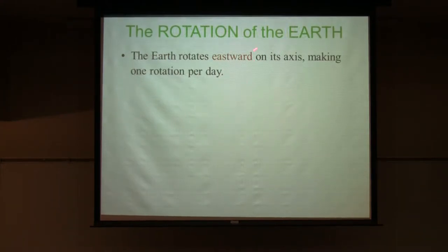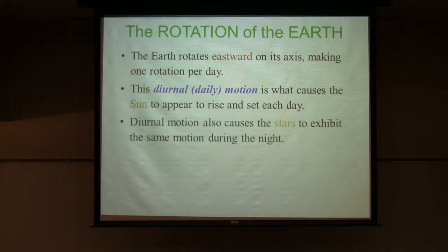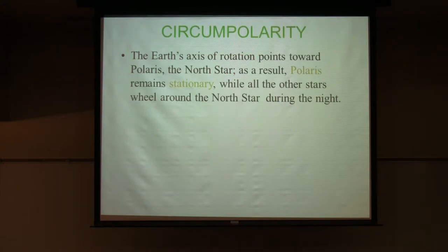Here's what I didn't know in 1957: the earth rotates eastward on its axis, making one rotation per day — that's what causes the sun to appear to rise and set each day. Diurnal means daily — same thing. Also, the stars do the same thing at night because of the earth's rotation — that was new information for me when I was just getting started. The earth's axis of rotation points towards the North Star, Polaris, so Polaris stays in the same place in the sky all the time.